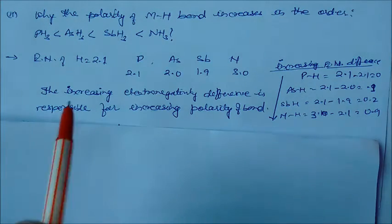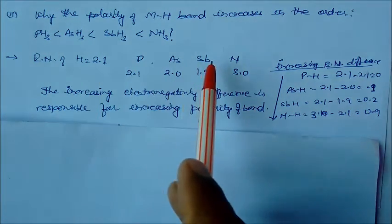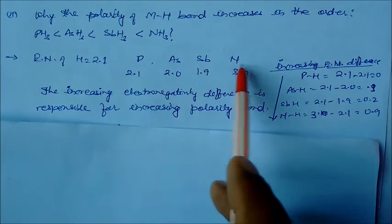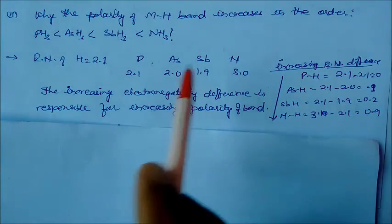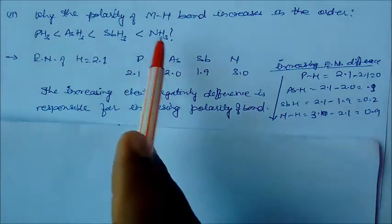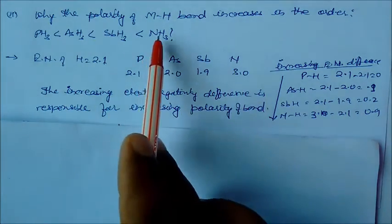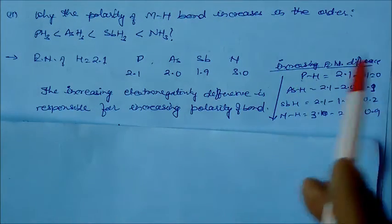Actually if you see the electronegativity of hydrogen is 2.1. But if you see phosphorus, arsenic, antimony, and nitrogen, this is in increasing order - only this is the highest order, this is decreasing, then highest. So actually this is based on the increasing electronegativity difference between two atoms. That is responsible for increasing polarity.